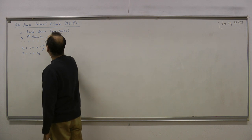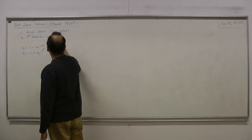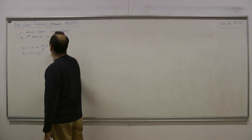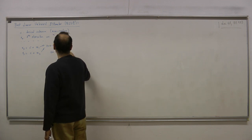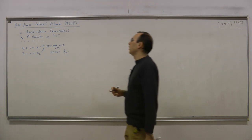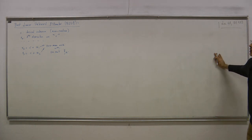These noise terms are zero mean with covariance matrix Rn. Since they are zero mean, we can use autocorrelation or covariance interchangeably.